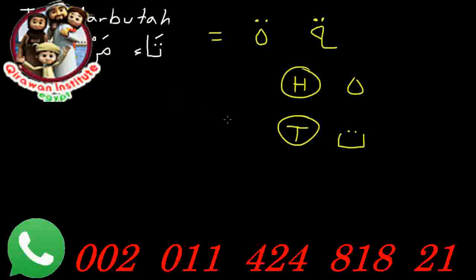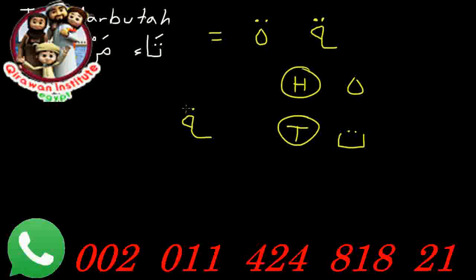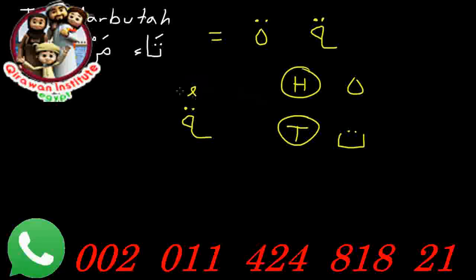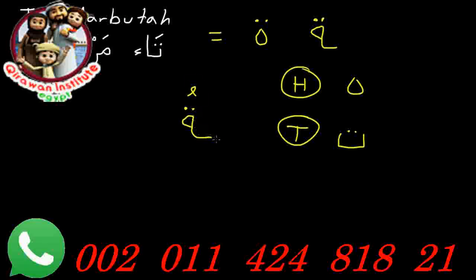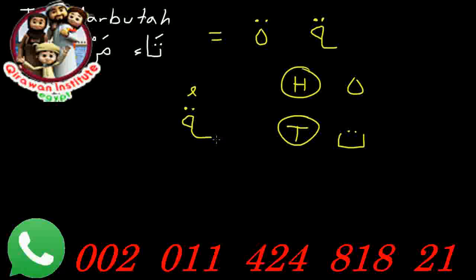If you look at the word Marbuta with the Ta Marbuta at the end, and you put a Lama here: normally if you don't pronounce the next word — if you just stop at the end of the word — you won't pronounce the mark above it, so it will just be Ta Marbuta. But if you're saying another word after it and want to keep the flow, you connect it and it becomes Ta Marbuta Tu.